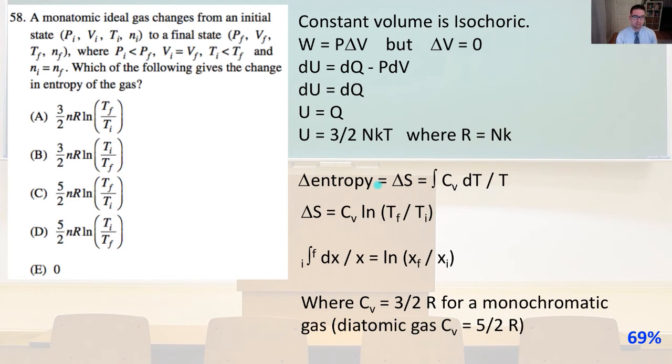So in here, where c_v is going to equal three halves r from monatomic gas, where a diatomic gas c_v is going to equal five halves r. So that is going to give us answer A.